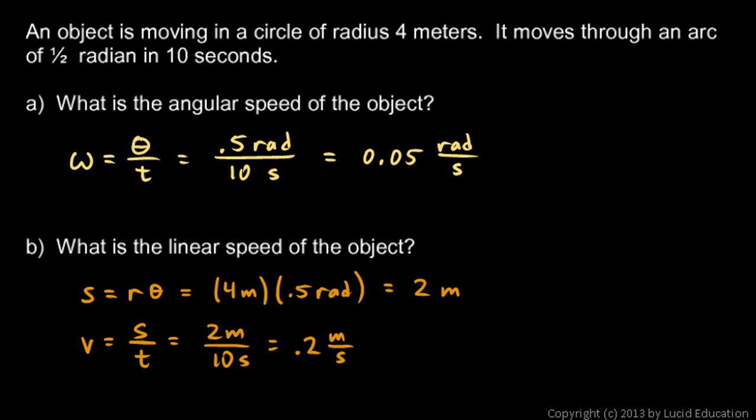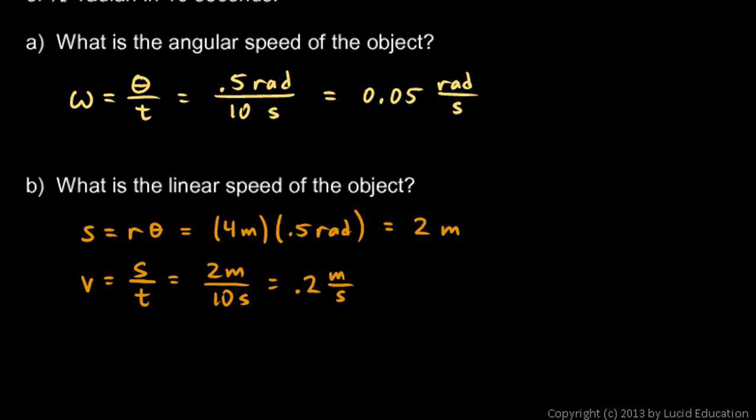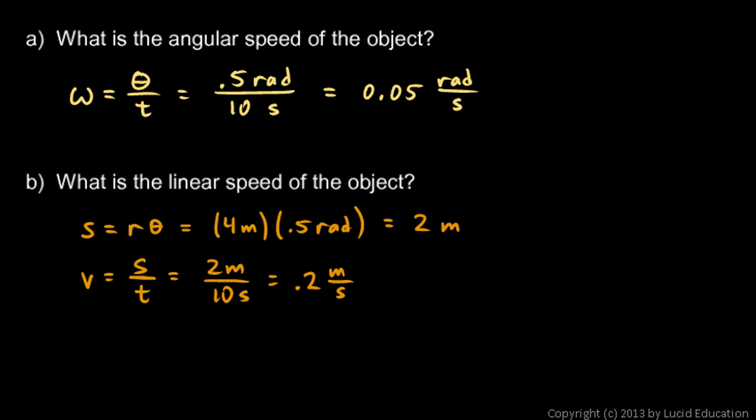Let me show you another way to think about the same problem. Okay, we could say v, the linear velocity, is r ω. This should give us the same answer here. v is r ω.